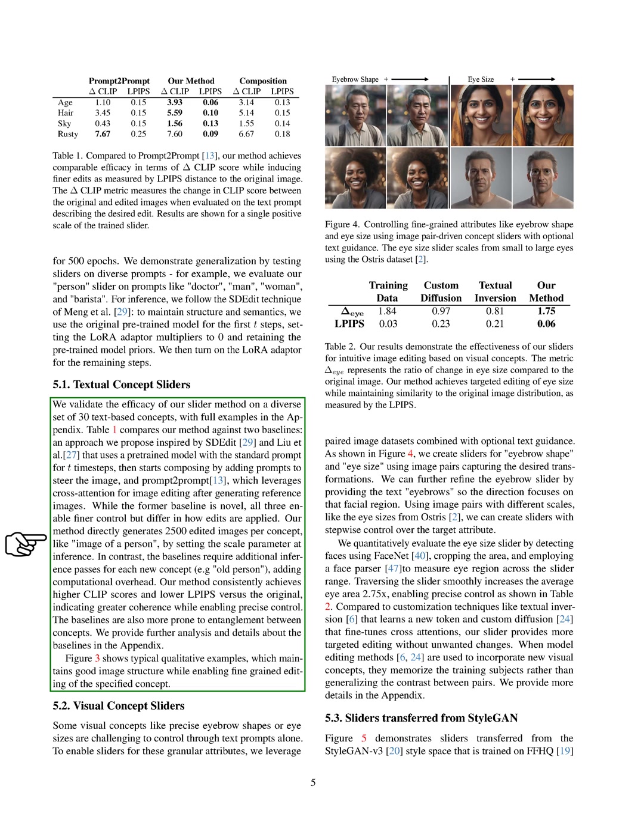We tested our slider method on 30 different text-based concepts and compared it to two other methods. One was inspired by SDEdit and Lou et al., using a pre-trained model with a standard prompt for a few steps then adding prompts to guide the image. The other method, called Prompt2Prompt, uses cross-attention for image editing after generating reference images. Our method directly generates 2,500 edited images per concept by adjusting the scale parameter, whereas other methods require additional steps for each new concept, adding computational overhead. Our method consistently achieves higher CLIP scores and lower LPIPS versus the original, indicating greater coherence while enabling precise control.